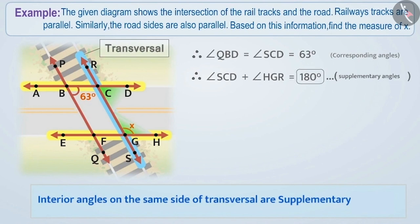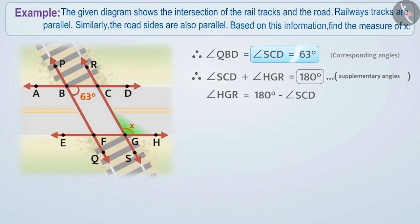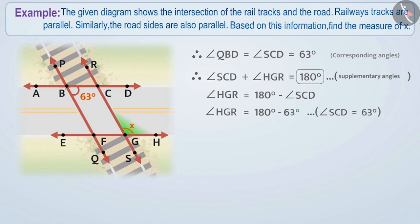Hence, the sum will be 180 degrees. Therefore, angle HGR is equal to 180 degrees minus angle SCD. Since angle SCD is equal to 63 degrees, angle HGR is equal to 180 degrees minus 63 degrees, which equals 117 degrees. That is, the value of X is 117 degrees.